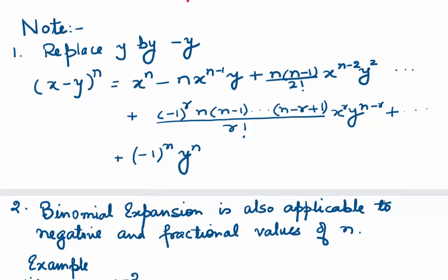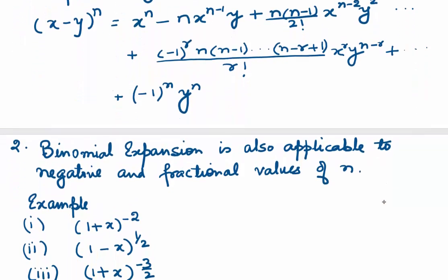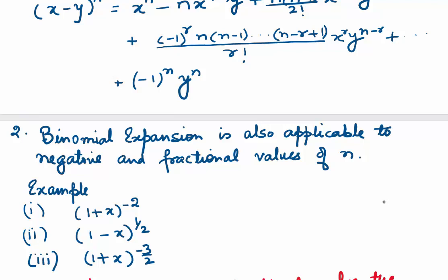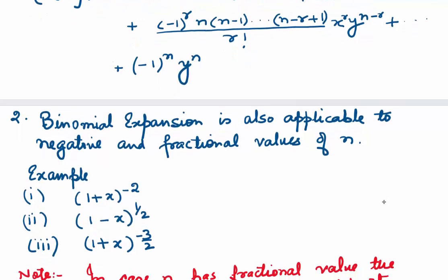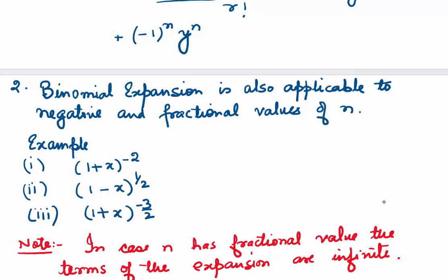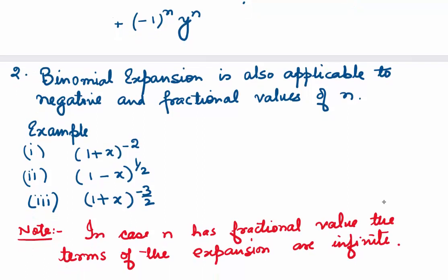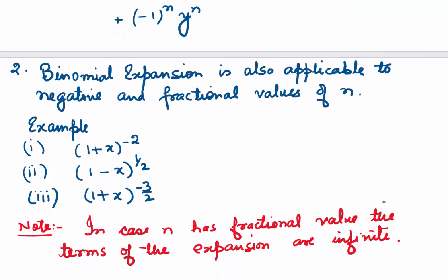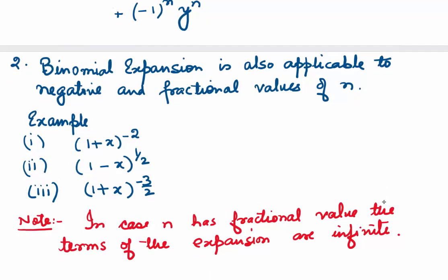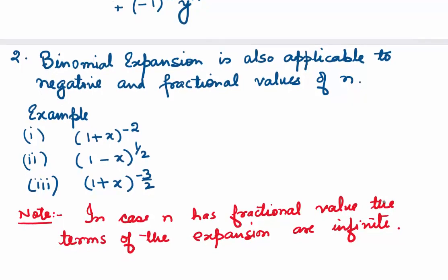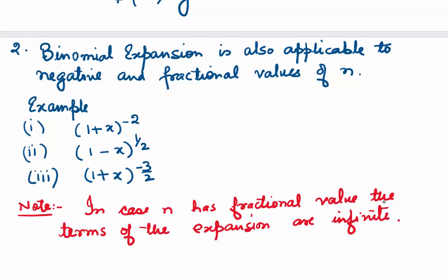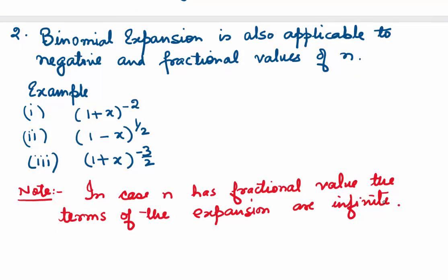You have to remember that binomial expansion is also applicable to negative and fractional values of n. For example, we can expand 1 plus x to the power minus 2, or 1 minus x to the power half, or 1 plus x to the power minus 3 by 2. However, whenever n has a fractional value, the terms of the expansion are infinite and they will converge only under a certain condition.